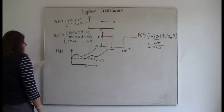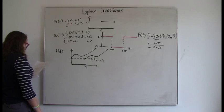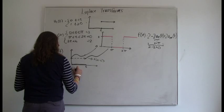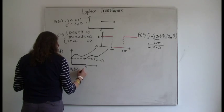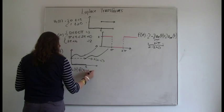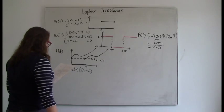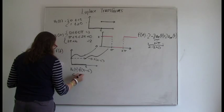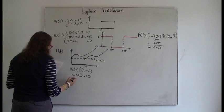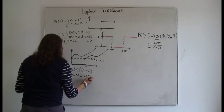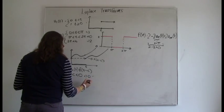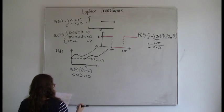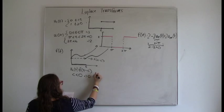So now we can say that this is the unit step function of c of t, so u sub c of t, times this function f of t minus c. So then when t is less than c, the u sub c of t is just going to be 0. So anything times 0 is obviously 0, so that just means that whole function that we just wrote, u sub c of t times f of t minus c, until, as long as t is less than c, that will all be 0.